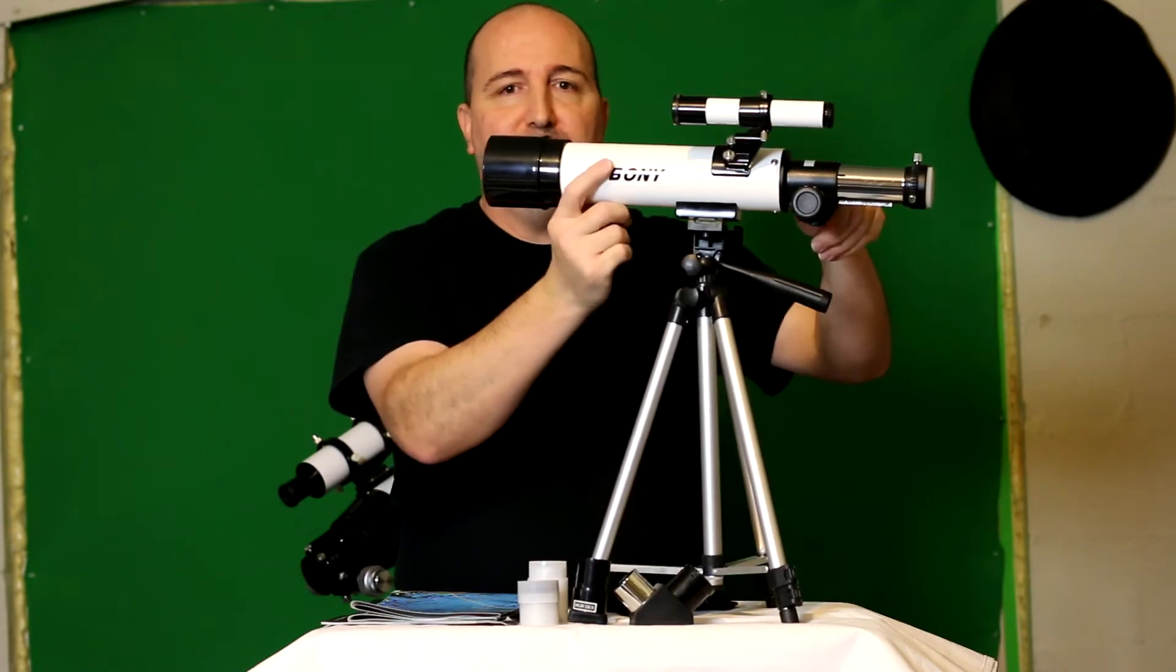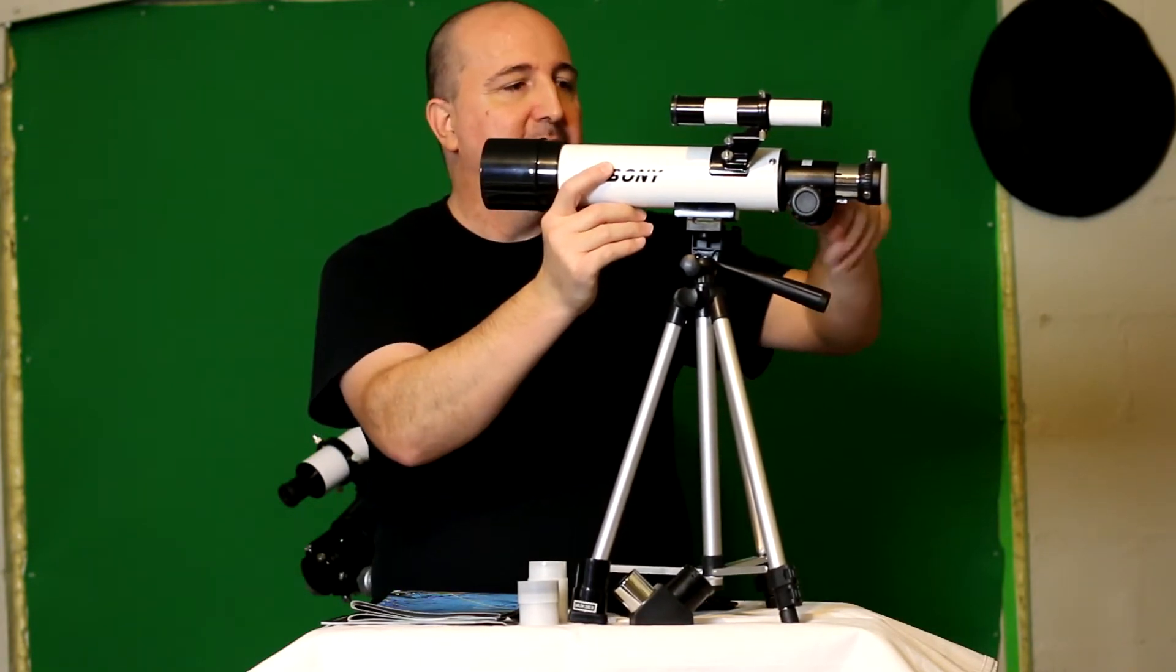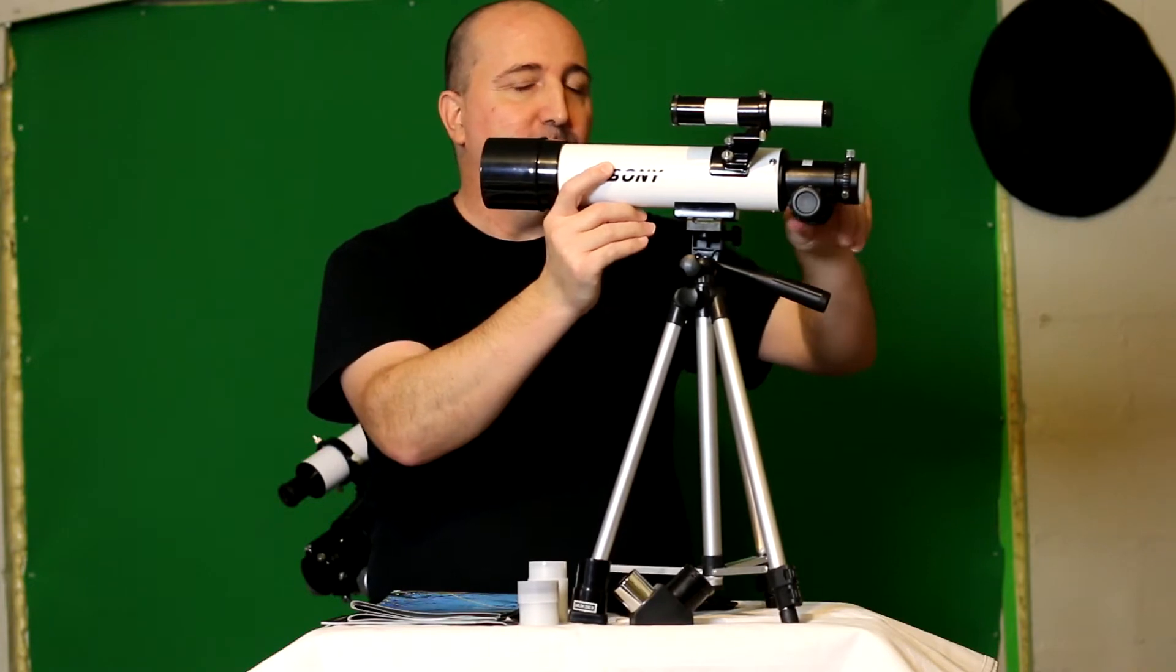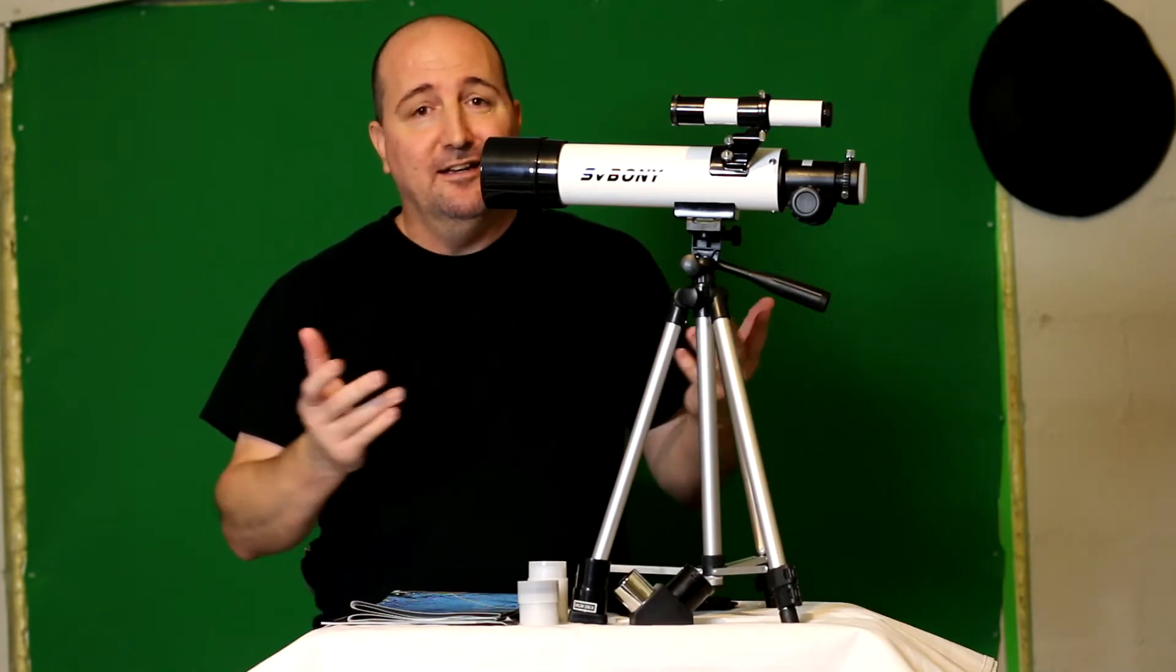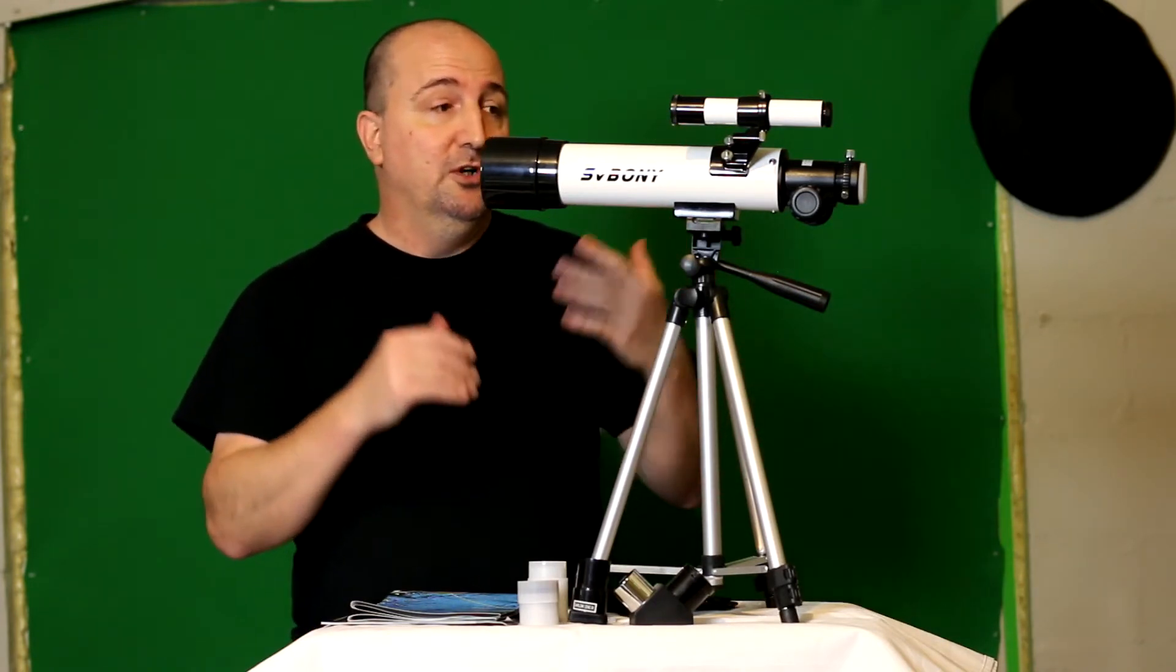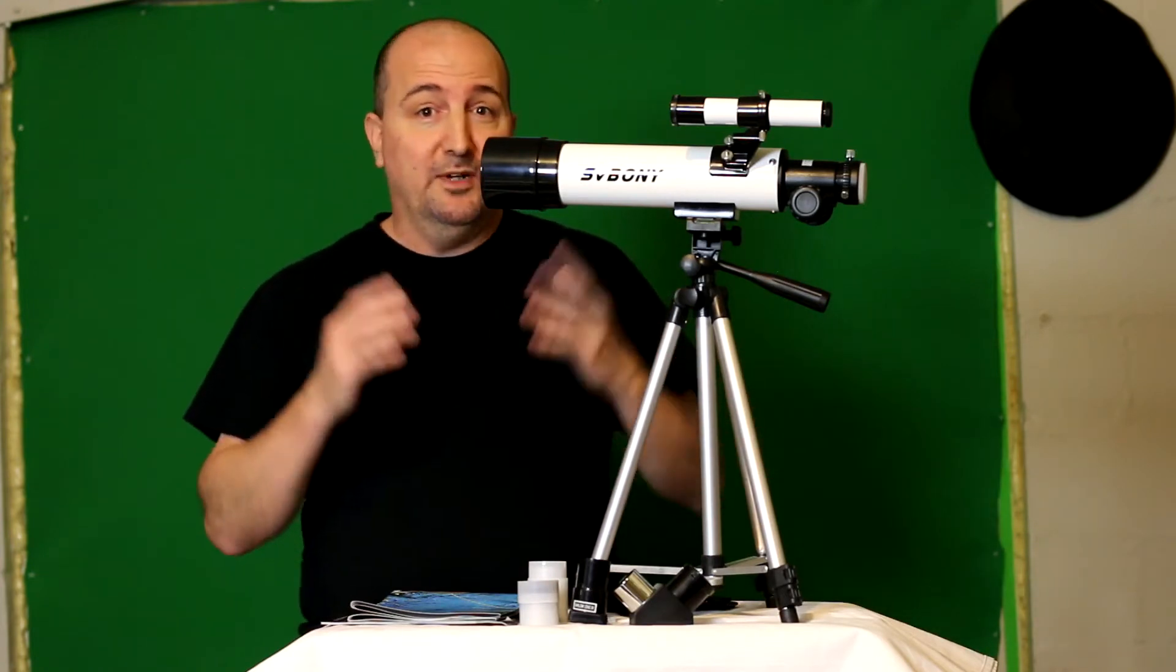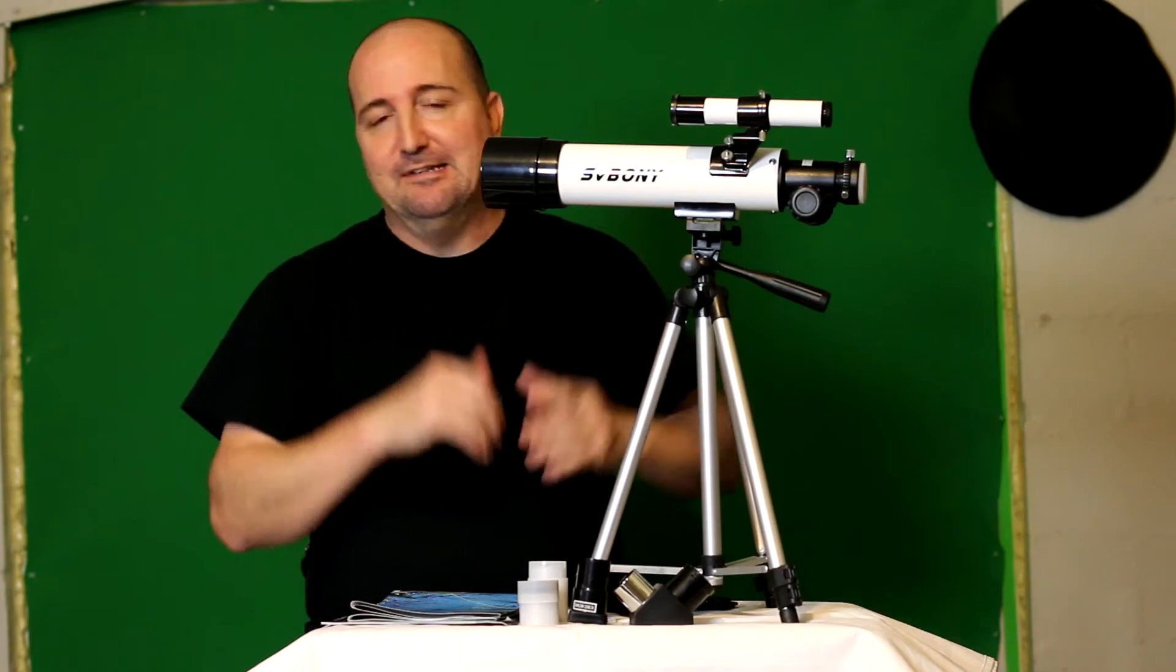It also comes with a nice little 5 by 20 finder scope, which is more than enough for this. The great thing about this telescope is not only is it good for astronomy and studying some of the things in the night sky, you can also use it as a nature telescope as well. If you want to take pictures of nature or observe nature and you want to get close to something that maybe wildlife that you can't get close to, this is kind of perfect.